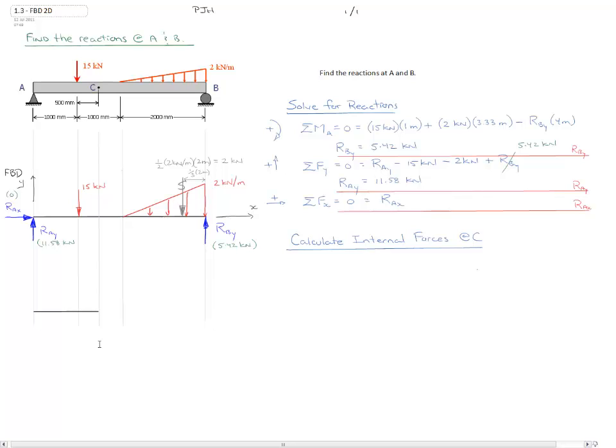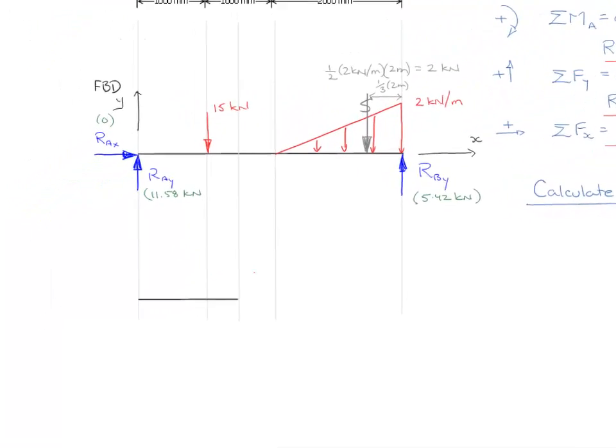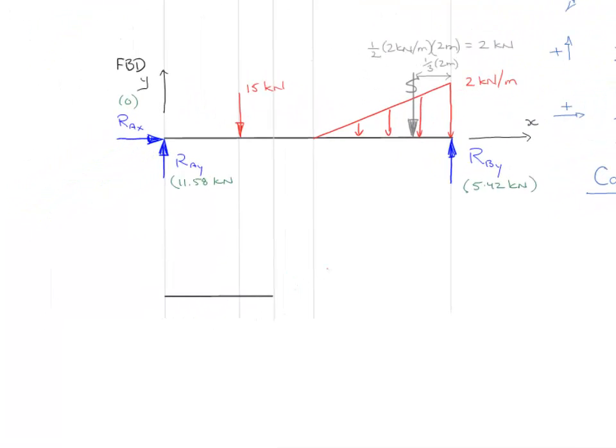To do that, what we need to do is we need to replace everything in that section with internal forces that are transferred by the structure. So I'm going to draw my internal forces here in the section, so we have possibility of a normal force. So I'll draw that in. We have the possibility of a shear force and the possibility of a moment.